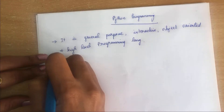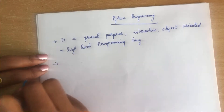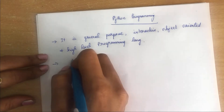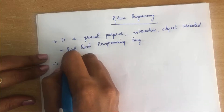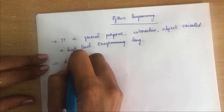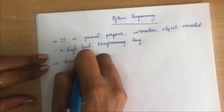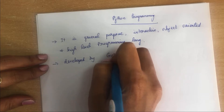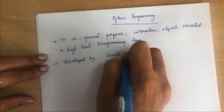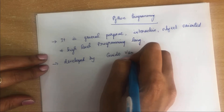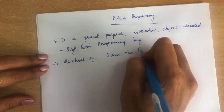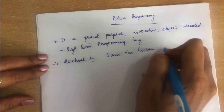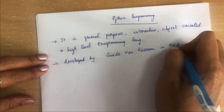Python was first developed by Guido van Rossum in the year 1990. This language was developed by Guido van Rossum in the early 1990s.